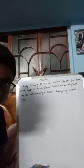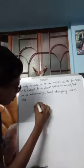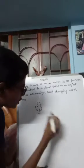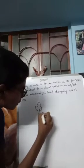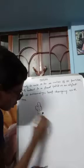First, we have to know what is motion. A body is said to be in motion if its position with respect to a fixed point or an object in its surrounding keeps changing with time. For example, let us take a car and a tree. Suppose this is a tree and in front of it there is a circle — pretend this circle as a car.